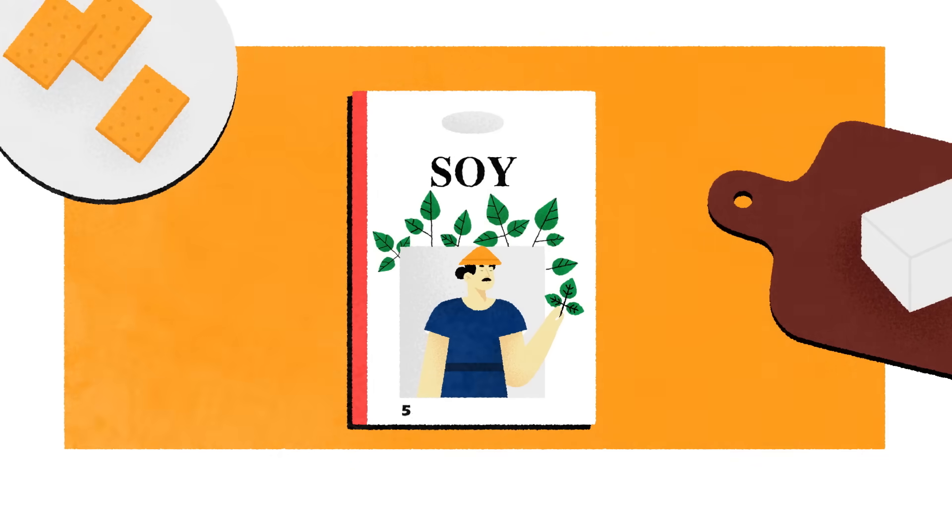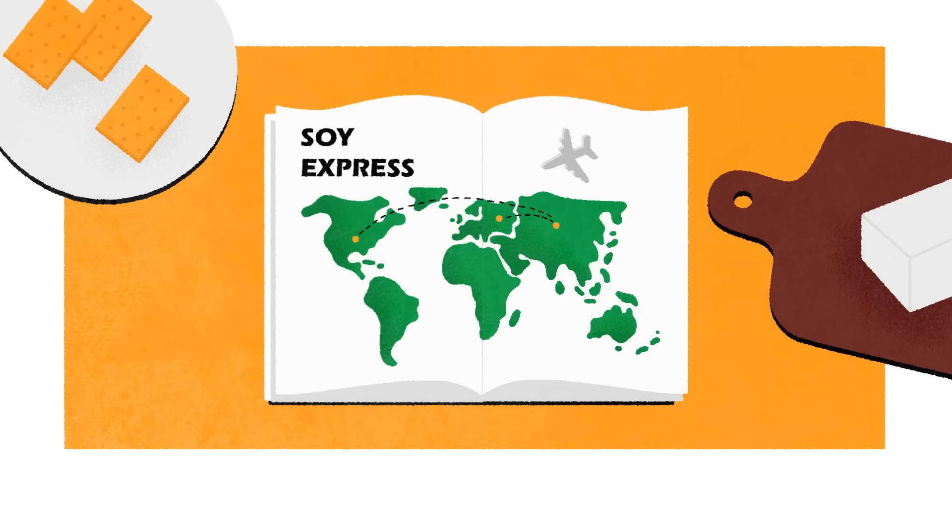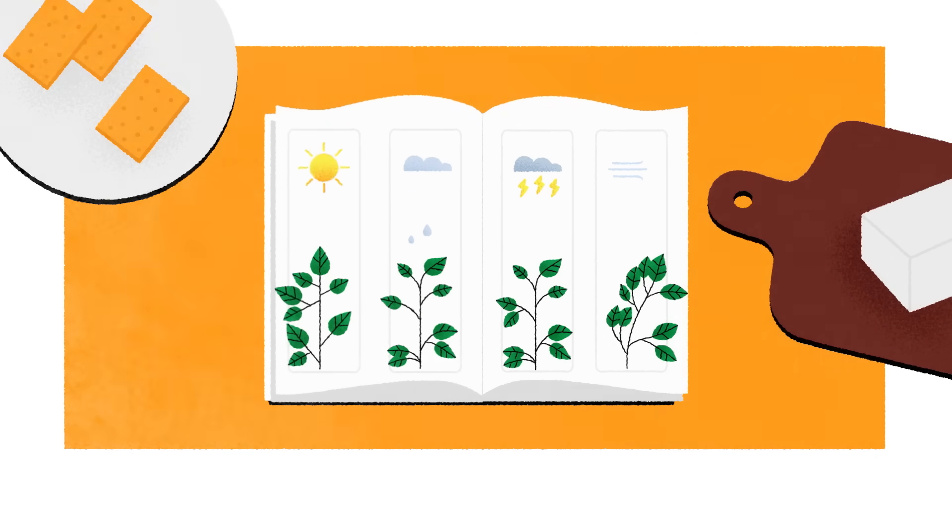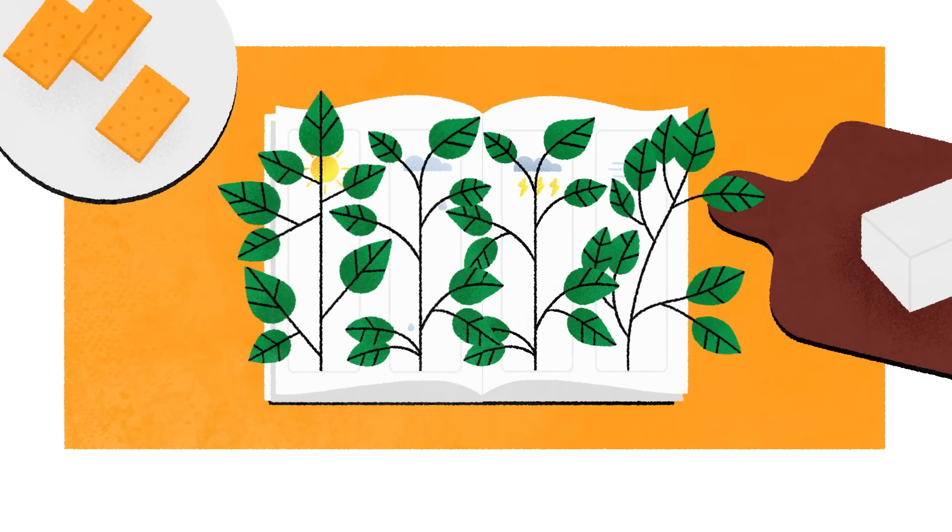Soybeans have been cultivated in Asia as early as 5,500 years ago. But since then, they've spread across the globe. Part of soy's success is that the crop can be grown easily and cheaply in variable conditions.